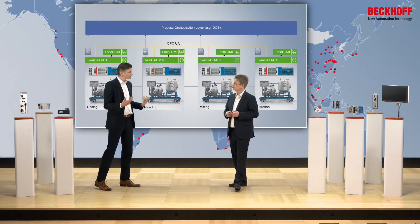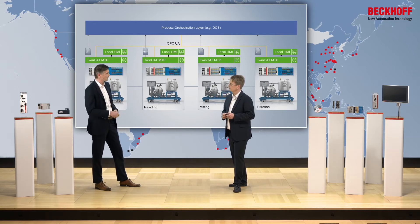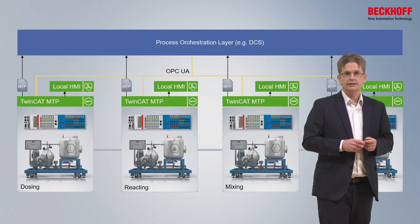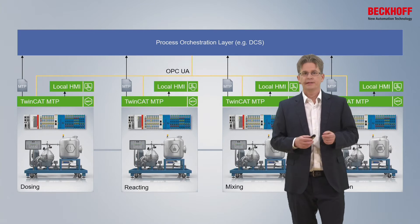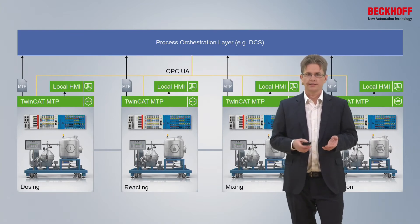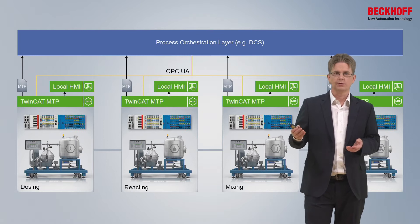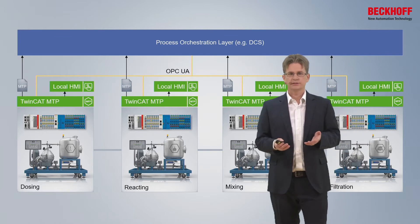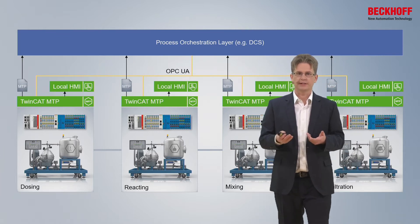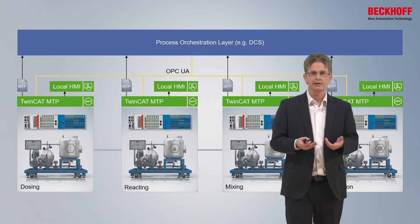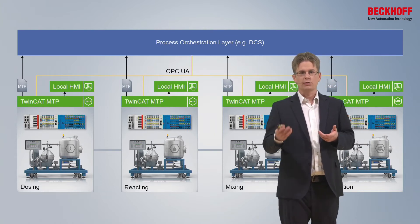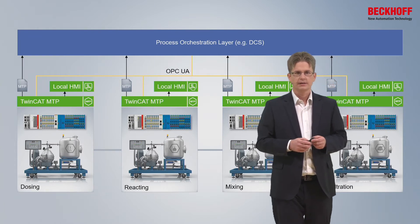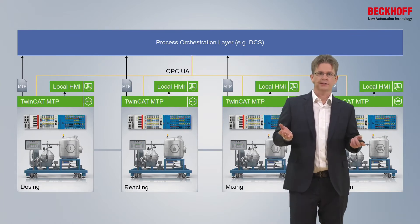How does the process orchestration layer actually know how to communicate with the module? MTP is a file that is read into the POL. It contains a description of services — a module provides services which are exposed in the MTP file and then described and read by the POL for calling these services. After import, the POL can directly use it.